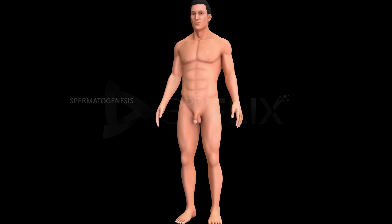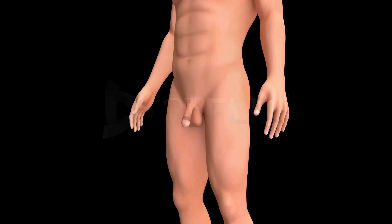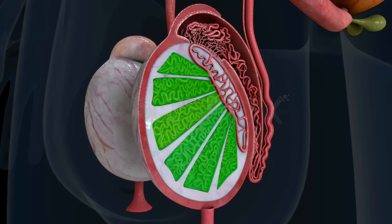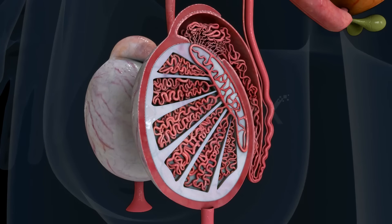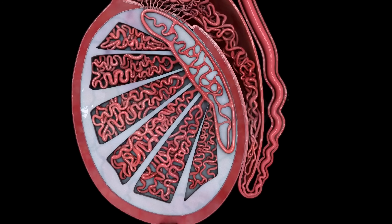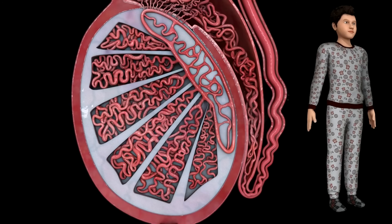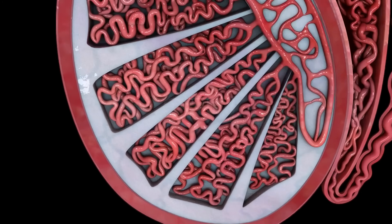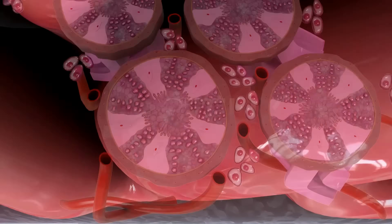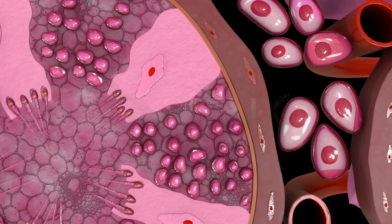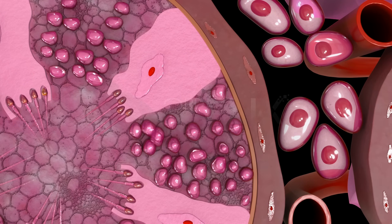Spermatogenesis takes place in the seminiferous tubules in the testes. It begins at puberty, i.e., attainment of sexual maturity. The process of spermatogenesis occurs in three stages: spermatocytogenesis, meiosis, and spermiogenesis.